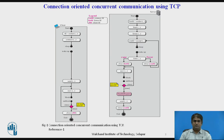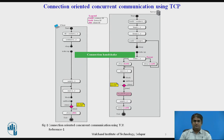Now, the client process. The client process is simple. The client calls the socket function to create a socket. It then calls the connect function to request a connection to the server. The connect function is a blocking function — it is blocked until the connection is established between the two TCPs. When the connect function returns, the client calls the send function to send data to the server.